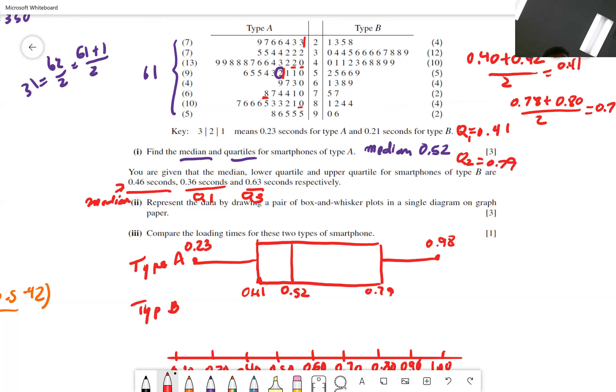Type B, the smallest number for type B was 0.21. So now you put the dot here. And then the first quartile is 0.36. So it's right here. And then the next one is 0.46. That's the median. So we got 0.36, up 0.46. And then you have 0.63. Now take a look at it. So what can we say?